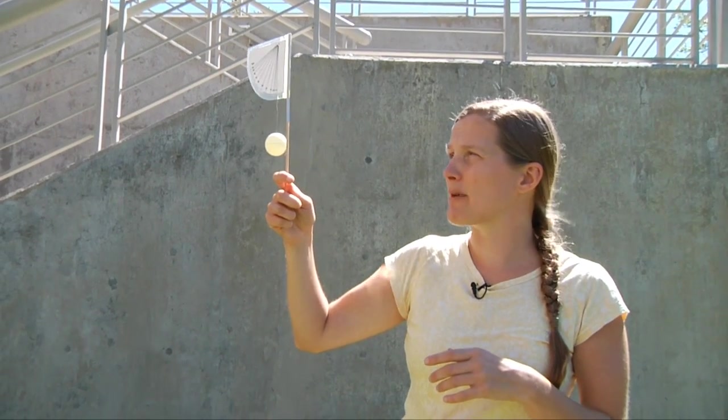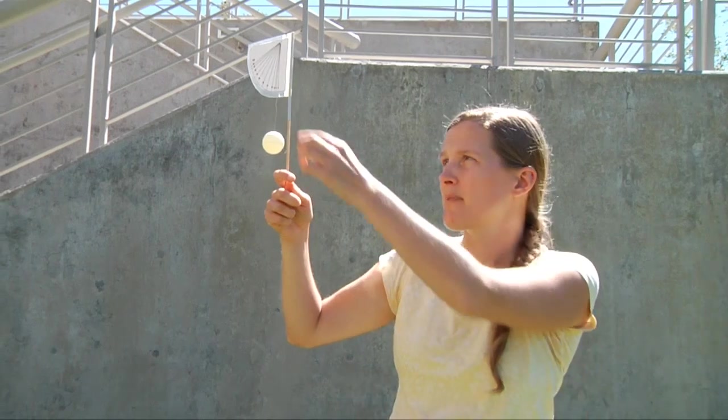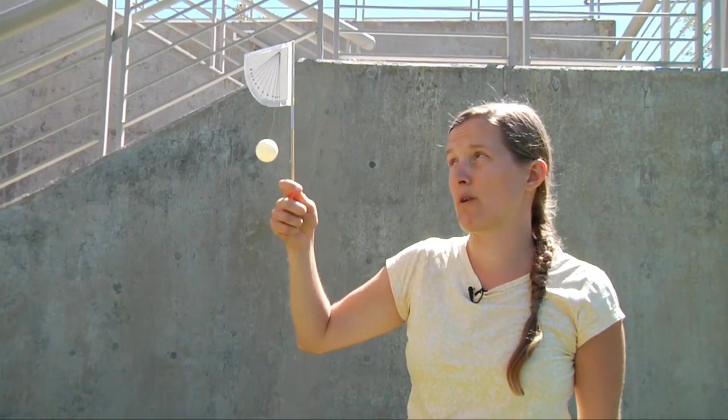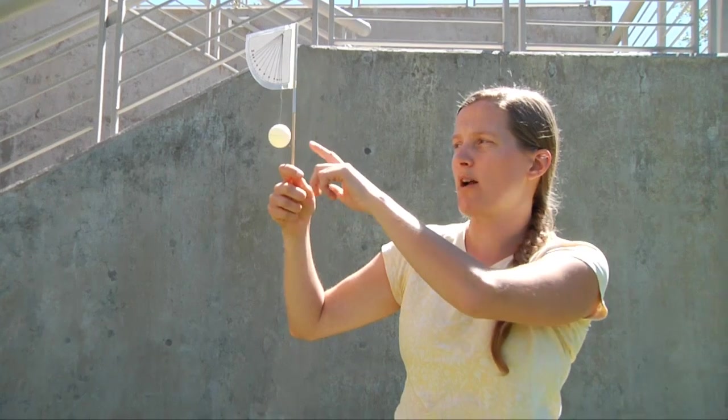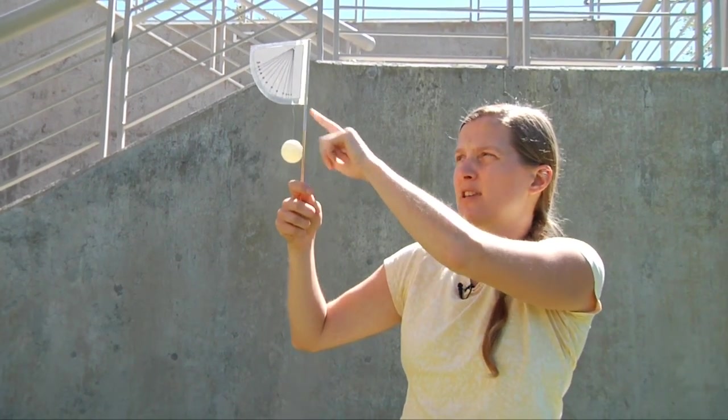So as we're standing here the wind is blowing a teeny little bit. And so we can see this white portion moving around with the wind. So that's going to tell you the wind direction. And remember the wind direction is the way the wind is coming from, not going to. And then another person is going to be in charge of watching this ping pong ball and where that fishing line is pointing to on the actual wind speed portion of the apparatus. So you'll make sure to have somebody to record all this information as well.